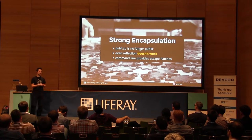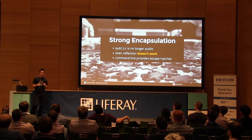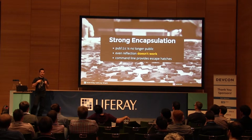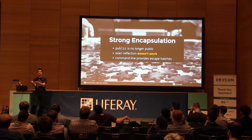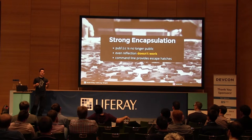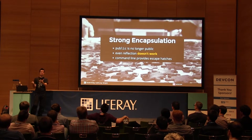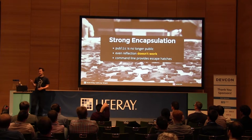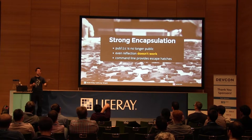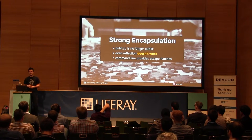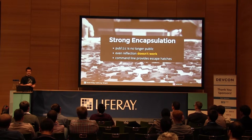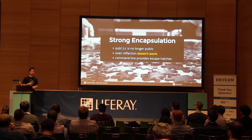This matters because today, if you don't use a different module system, you can accidentally depend on your dependencies' dependencies. Let's say I use Spring, and Spring uses Apache Commons. Then I can start using Apache Commons code — my IDE will helpfully provide the imports. At runtime, Apache Commons is always there because Spring depends on it. But I never expressed that dependency in my POM XML or Gradle build file. So when Spring eventually drops that dependency, my code will suddenly stop working. That's not something anyone wants.